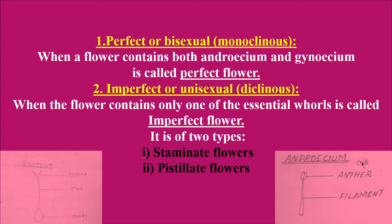Perfect flowers: when a flower contains both the male and female parts — that is, androecium and gynoecium — then the flower is said to be a perfect flower. This is the gynoecium structure, which contains the stigma, style, and ovary. The ovary is the part which bears the egg, that is the ovule. The stigma helps in pollination — it is the part where pollen grains stick.